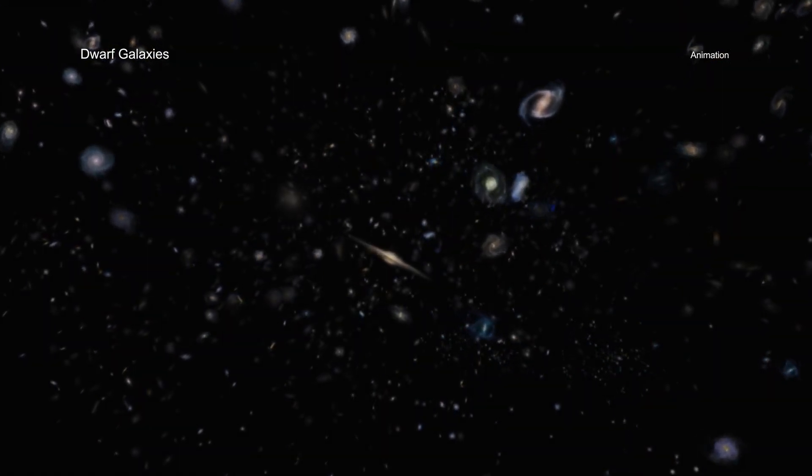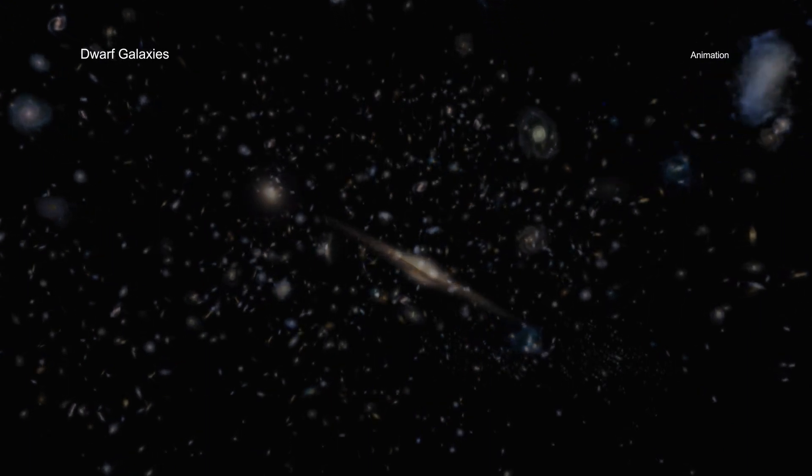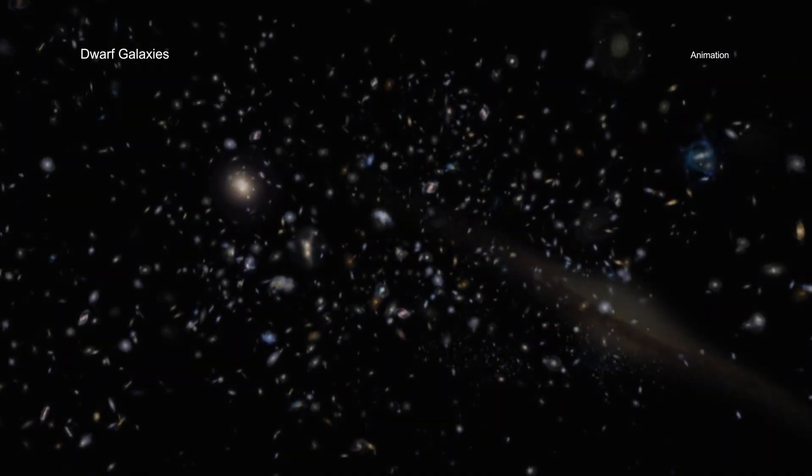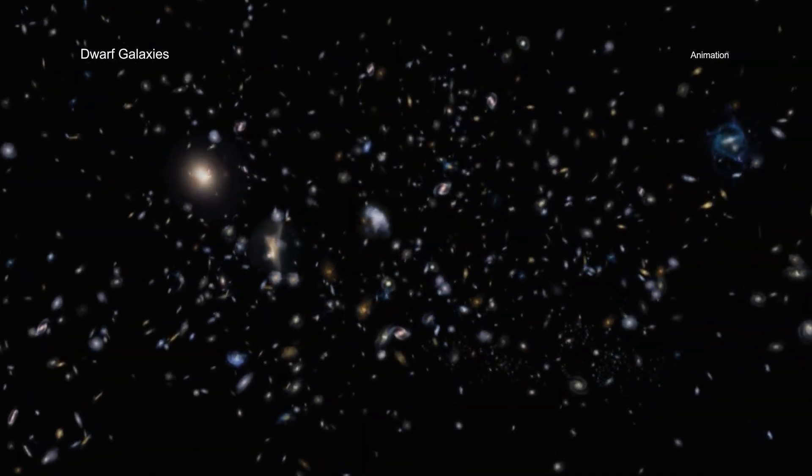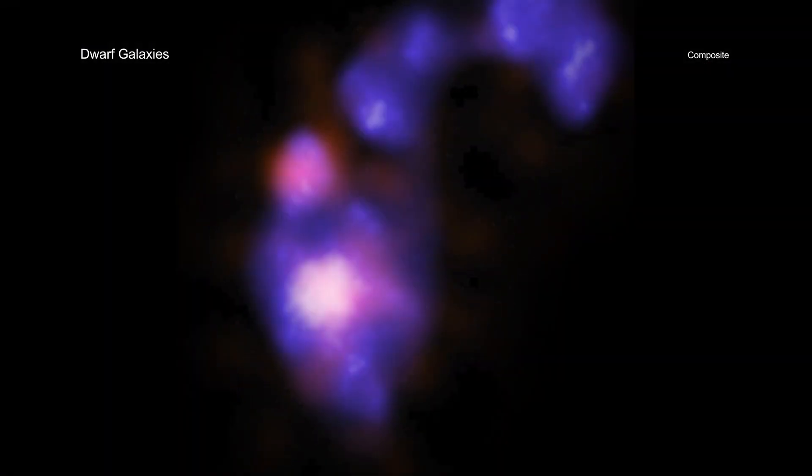Using this technique, a group of researchers identified two pairs of merging dwarf galaxies in separate galaxy clusters. The first is ABEL-133, which is located about 760 million light-years away. The second is the galaxy cluster ABEL-1758S, which is about 3.2 billion light-years from Earth.